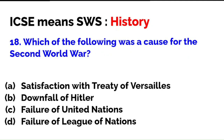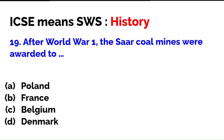Which of the following was a cause for the Second World War — satisfaction with the Treaty of Versailles, the downfall of Hitler, failure of the United Nations, or failure of the League of Nations? The correct answer is: failure of the League of Nations. Many students in their hurry end up writing 'United Nations'. Also note — it is dissatisfaction, not satisfaction with the Treaty of Versailles. Please look at each option very carefully.